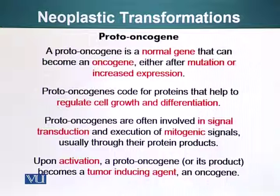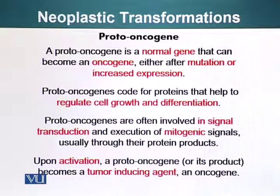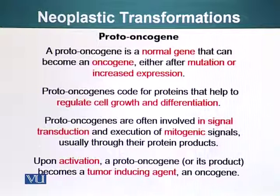These genes perform normal functions when they are normal and their gene product is normal. They are performing normal and essential functions for cells, as you will see. However, if there is a change in one of these proto-oncogenes which causes it to become an oncogene, it will result in cancer.